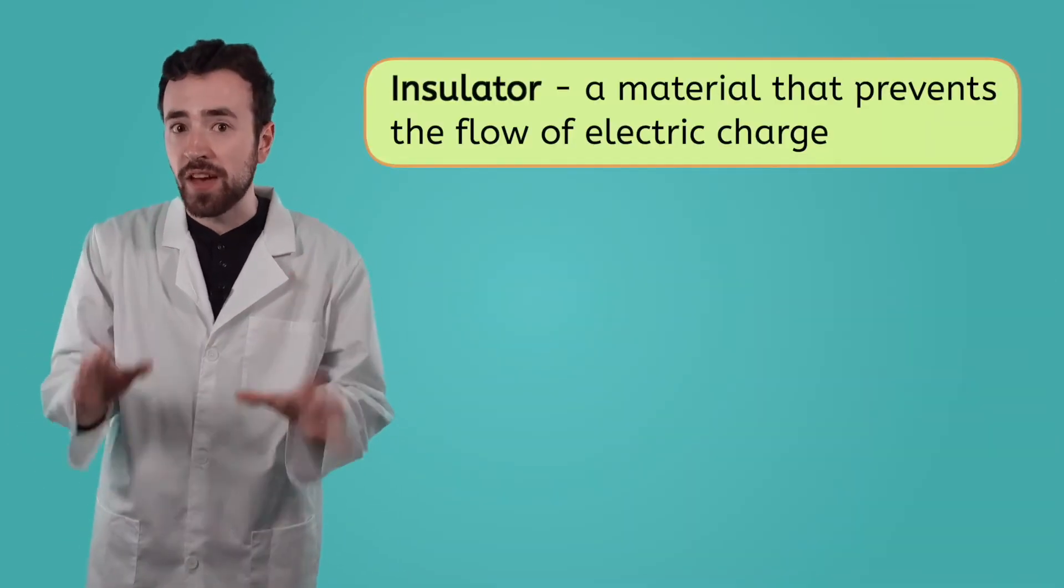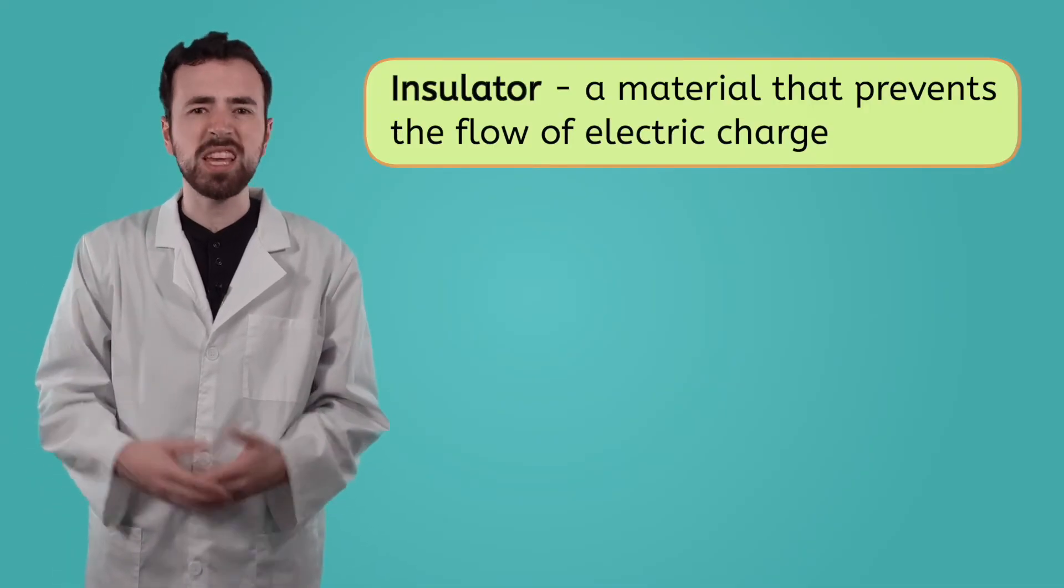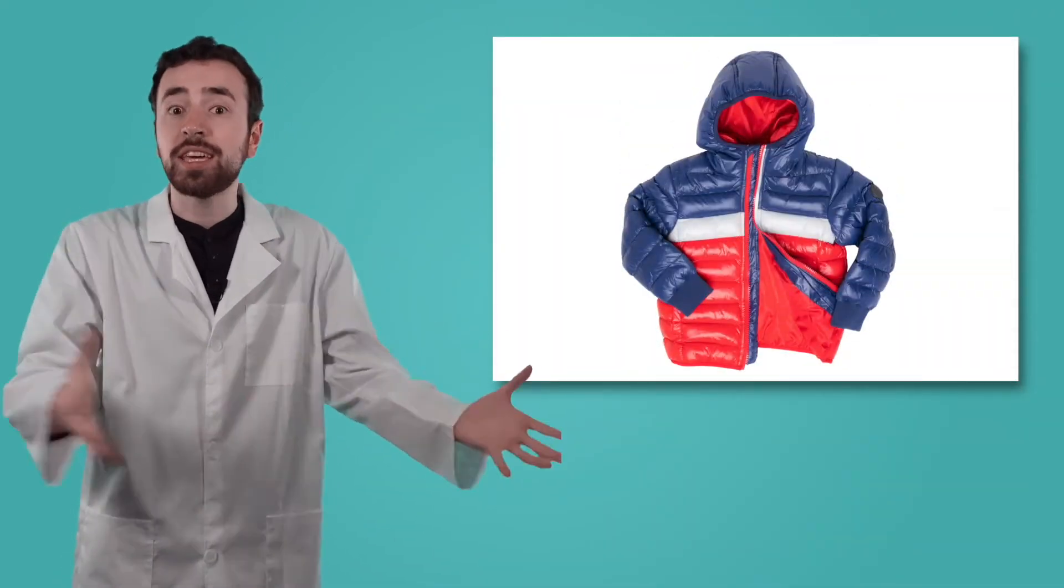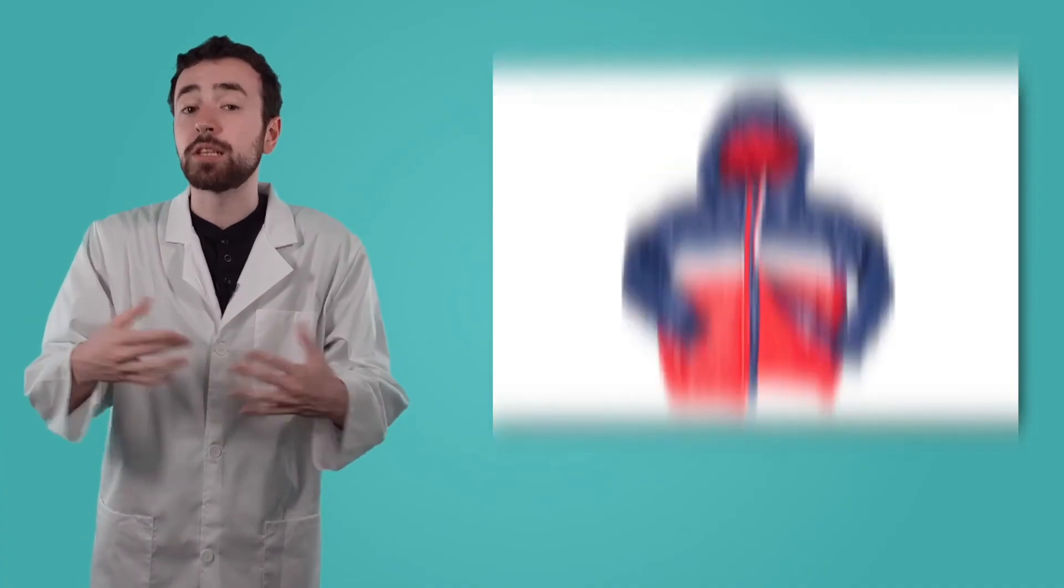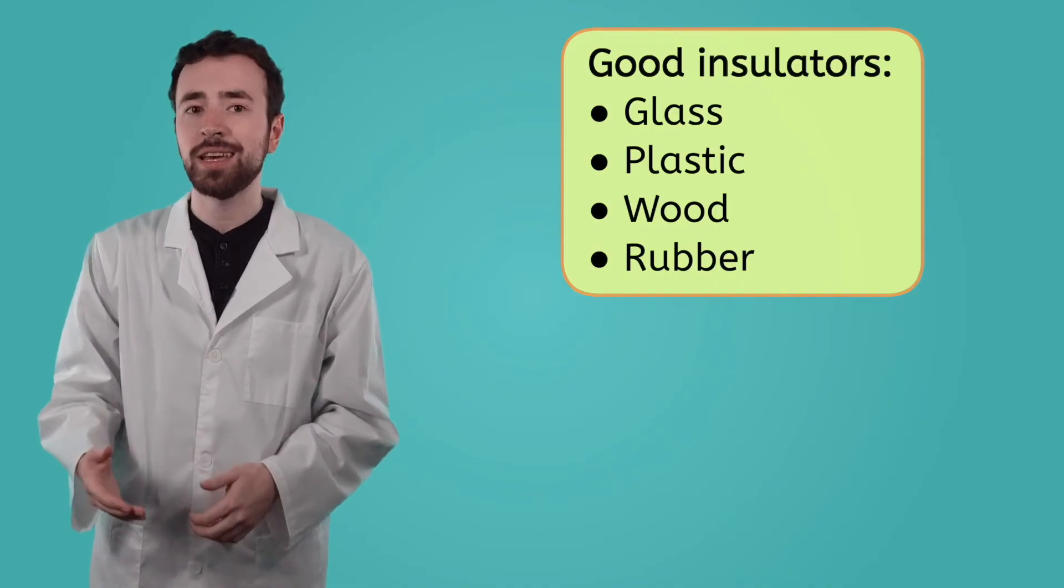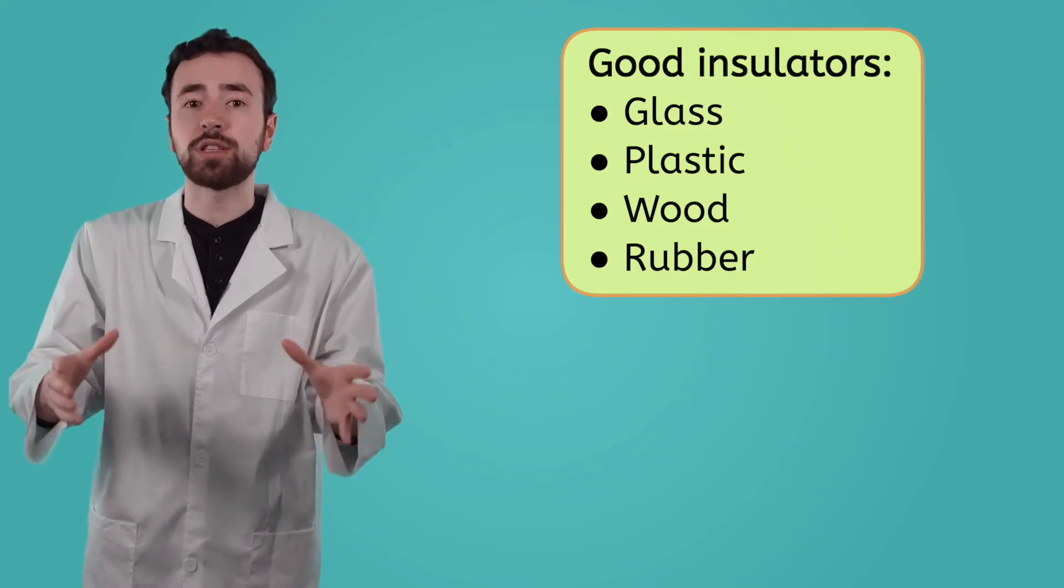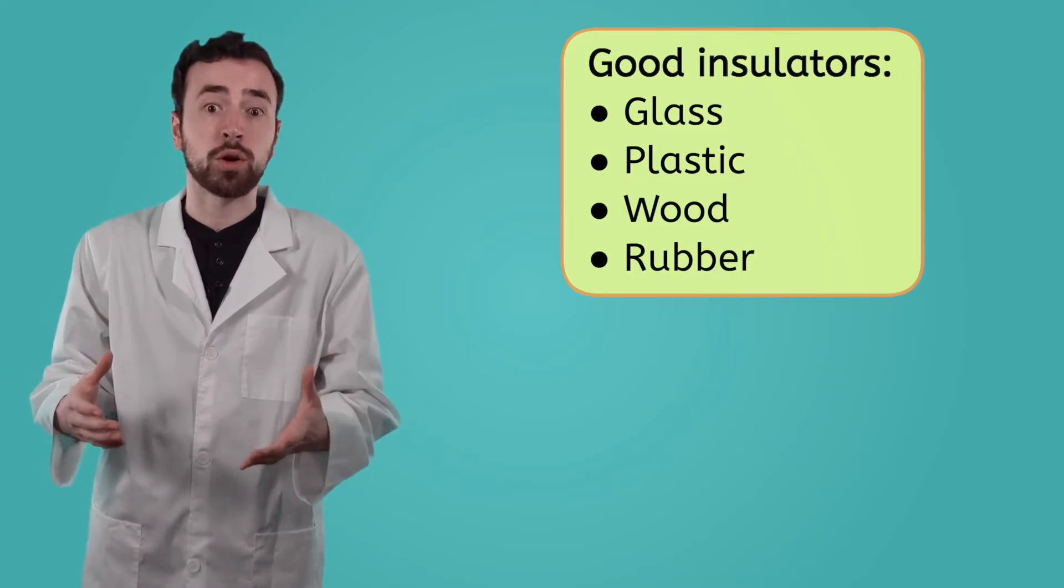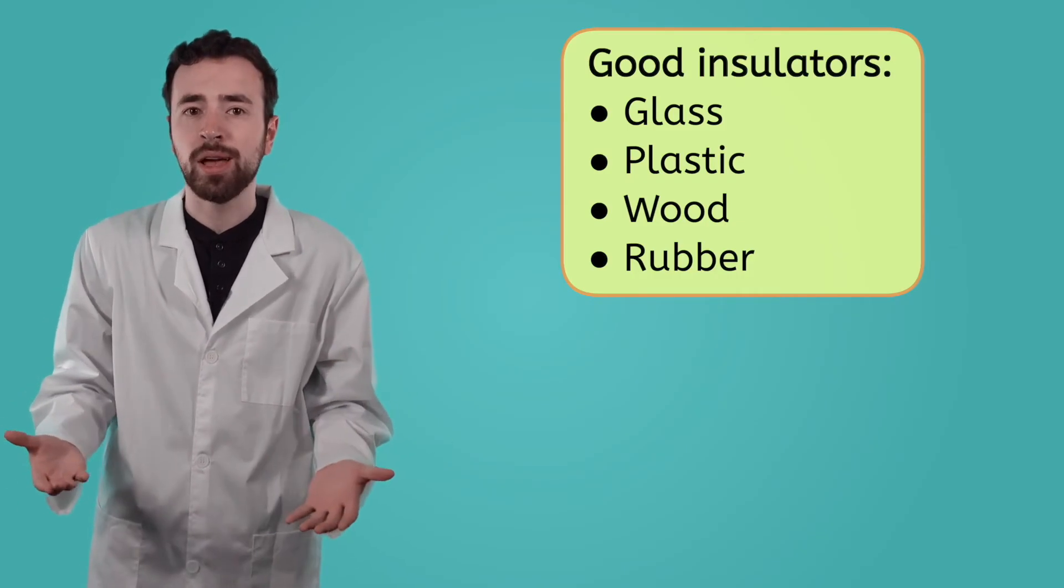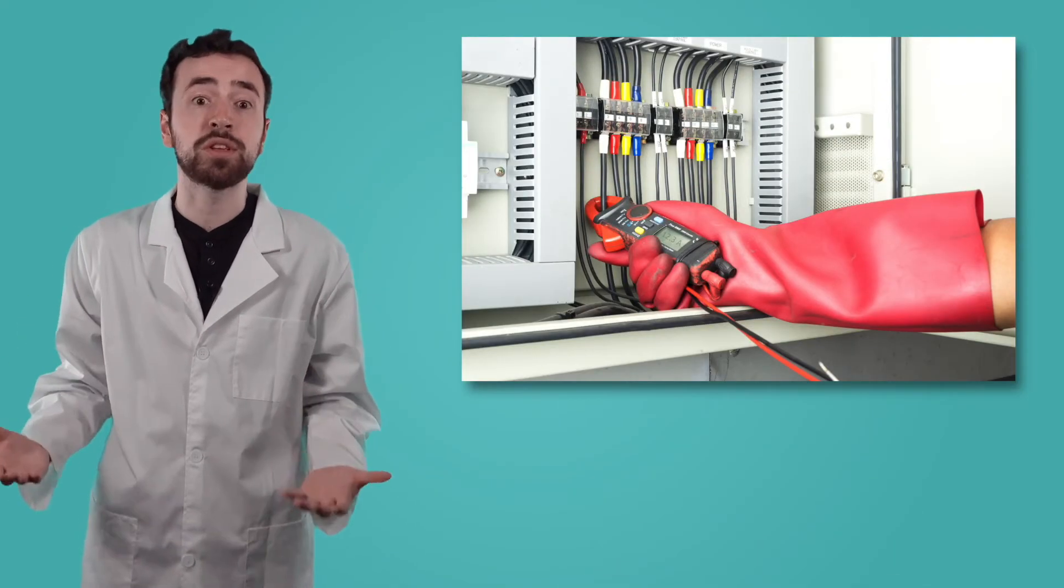Materials that prevent electric charge from flowing easily are called insulators. Think of insulating materials like the insulation of your house, or the stuff inside the lining of a winter coat, keeping things inside. Some materials that make good insulators of electricity are glass, plastic, wood, and especially rubber. That's why the outside of all those cords we were talking about earlier are made of rubber. And why electricians might wear rubber gloves and shoes when dealing with high levels of electricity.